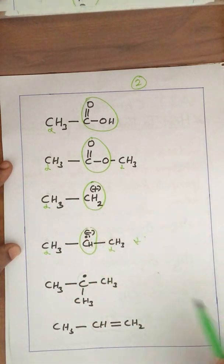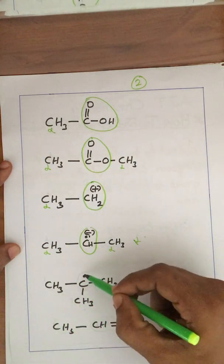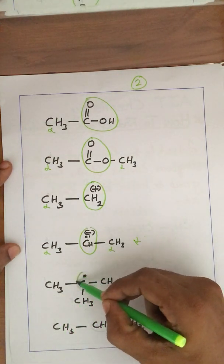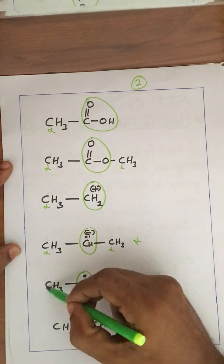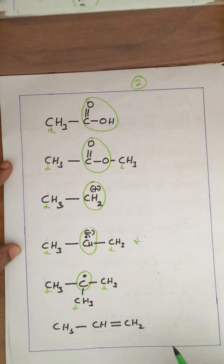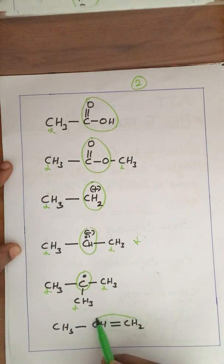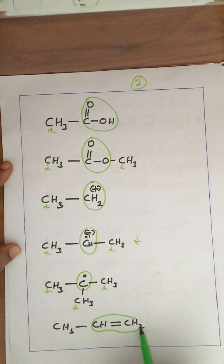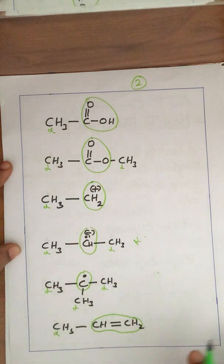For a free radical such as CH3-C•-CH3, the radical center is the most important group, so the adjacent carbons are taken as alpha carbon atoms. For an alkene, the double bond is taken as the most important group because of the presence of the double bond. The carbon attached to this double bond is therefore taken as the alpha carbon atom.